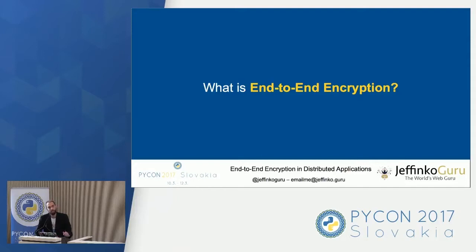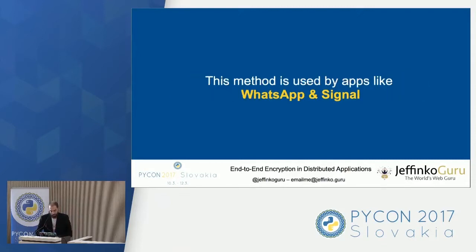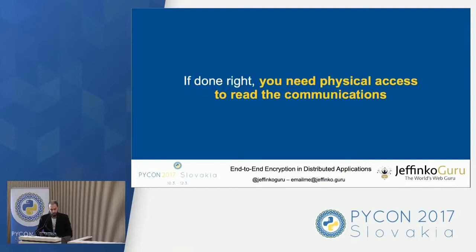So what is end-to-end encryption? Basically it is a method of communicating where only the users that are meant to read the messages are able to read them. You're encrypting something from point A and it's only decrypted at point B — in the middle it is not able to be read. This method is used by applications like WhatsApp and Signal to encrypt their messages, so you're able to have conversations with friends or business colleagues and no one is able to read the communication in between.